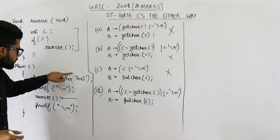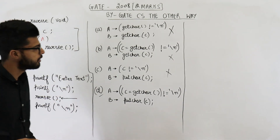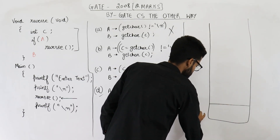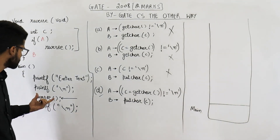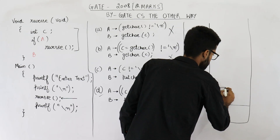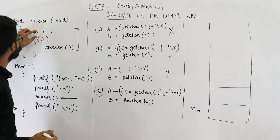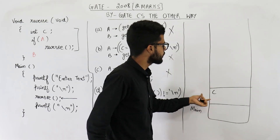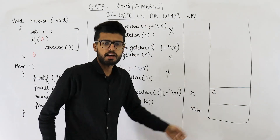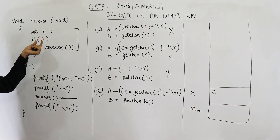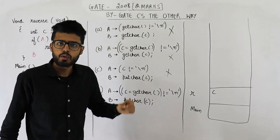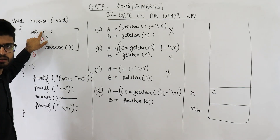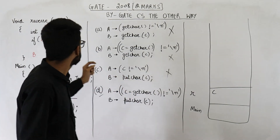You print 'enter text' on screen, change line, then call this function named reverse. First, the activation record for the main function is present on the stack. Then the main function calls the function named reverse, so one more activation record for reverse is pushed onto the stack. Control goes inside reverse. You are declaring an integer named C, so int C is declared in the activation record of reverse. Inside the if condition you might be checking the value of some variable, but currently no local variable has any value — C is declared but has no value, it might be some random garbage value.